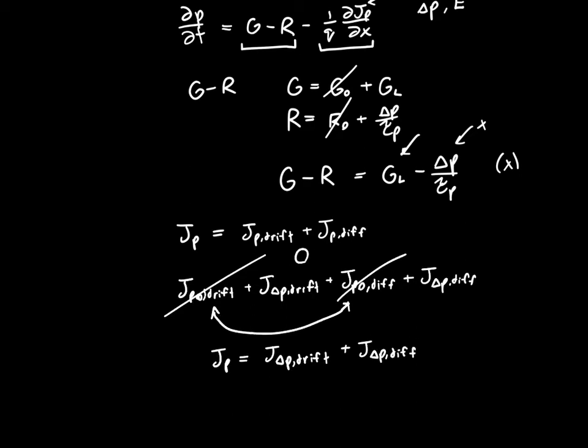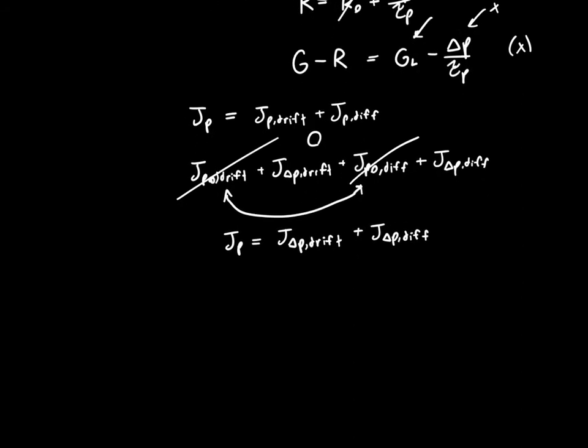We have equations for the drift and diffusion components of current. For drift, it's just q, the hole charge, times the mobility mu p times the electric field times the concentration delta p, plus the diffusion current, which is q times the diffusion coefficient times the negative derivative with respect to x. Sorry, that should be d delta p dx. Don't mind the d delta - delta p is a single variable, it's not two things combined together.